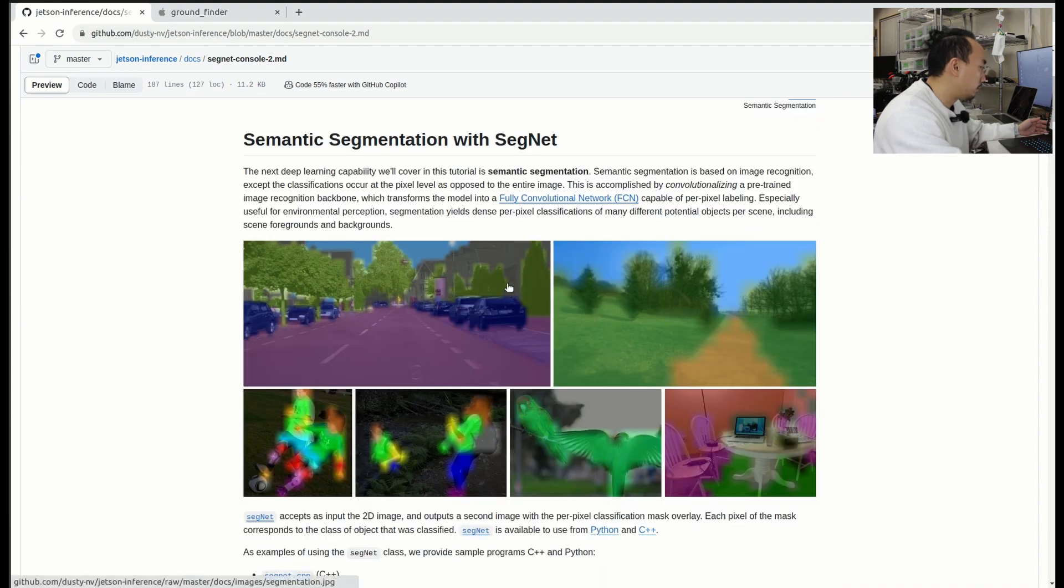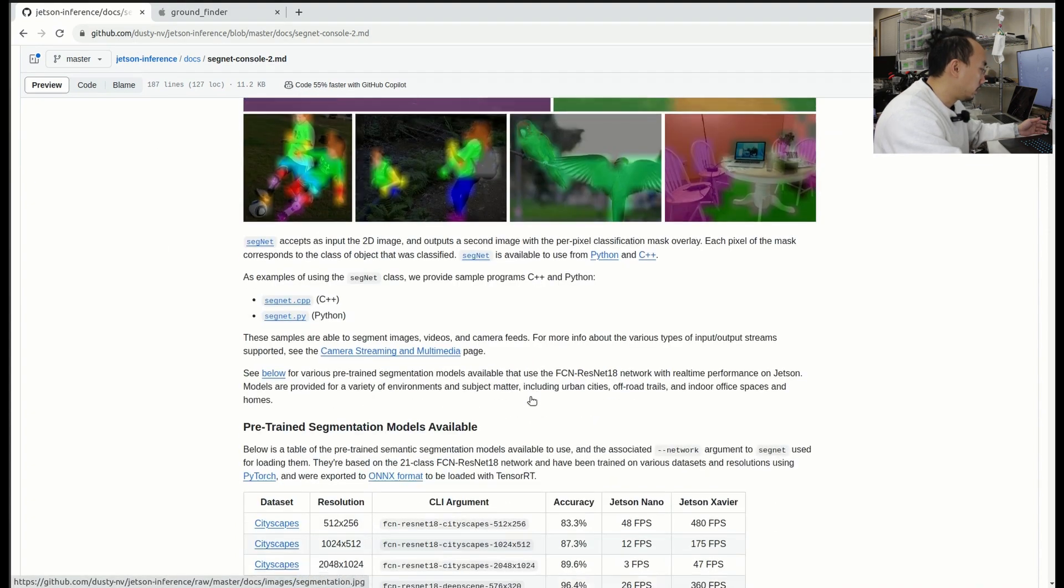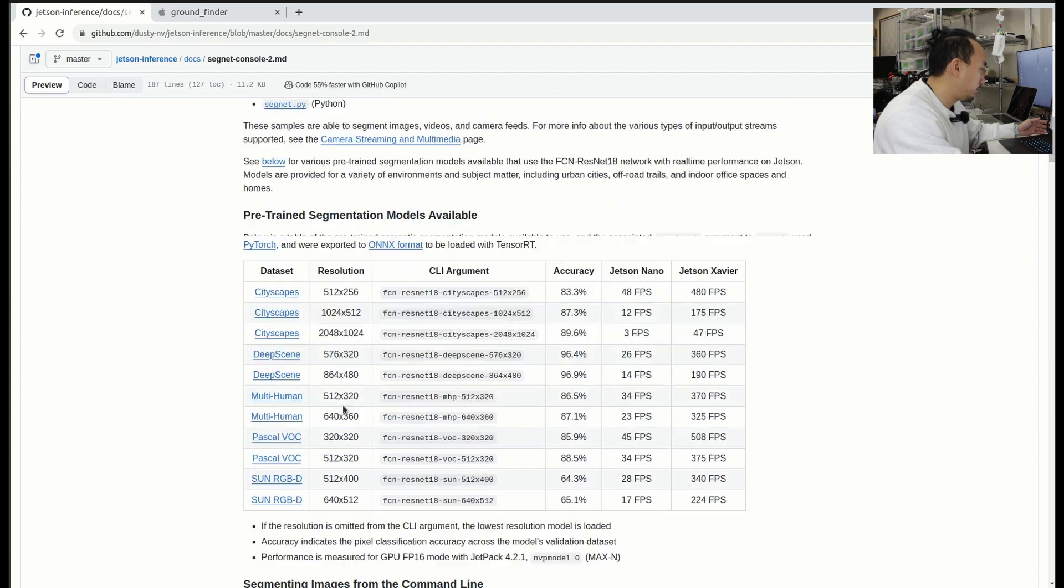There are many models that you can use like cityscape, deep scene, and multi-human. But for today I'm going to use this Sun RGBD with the resolution of 512-400.